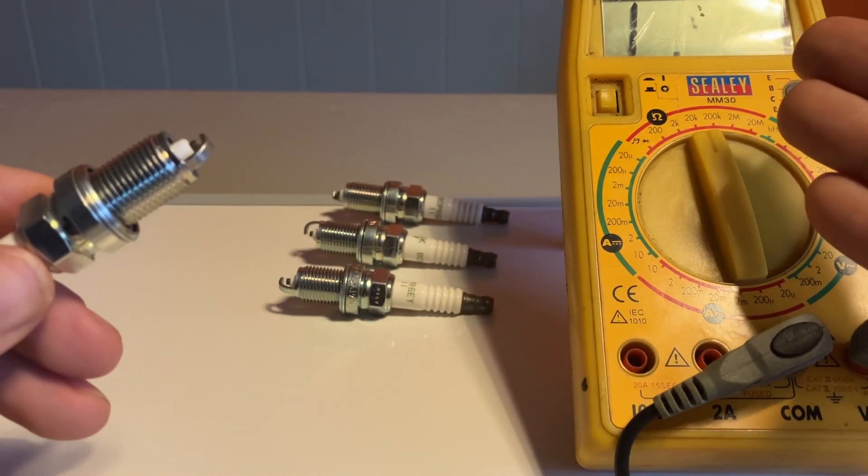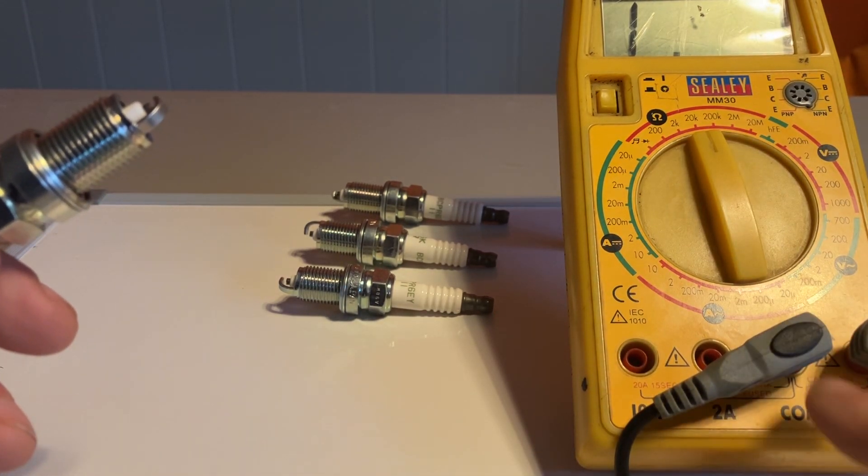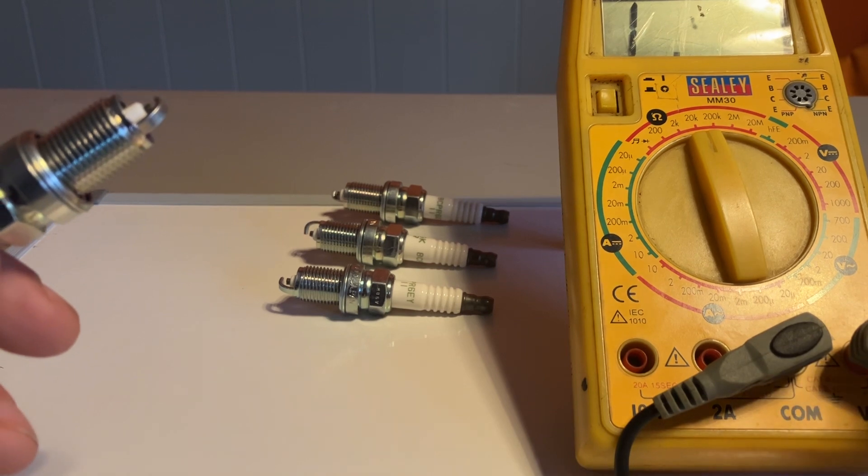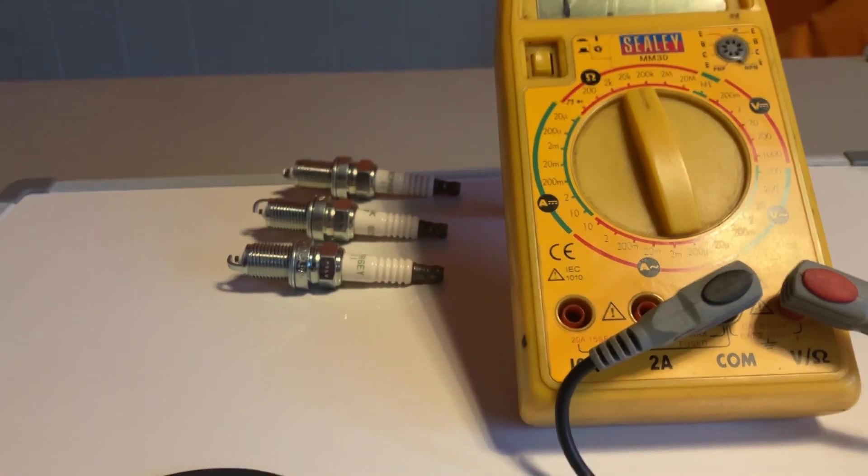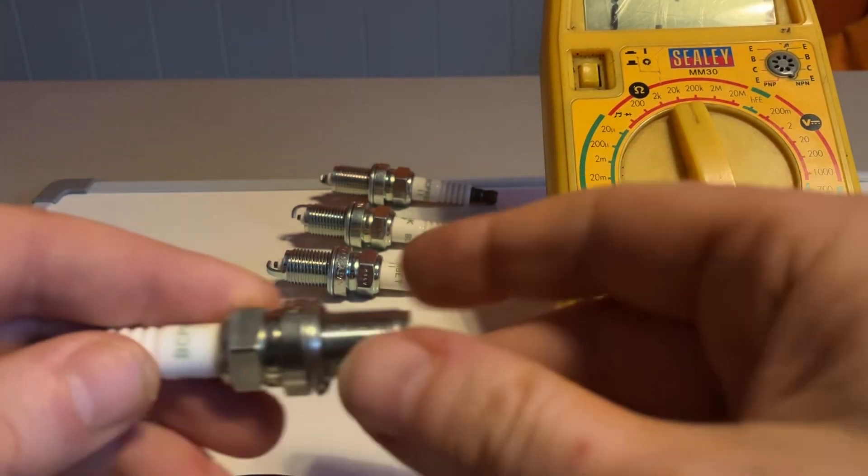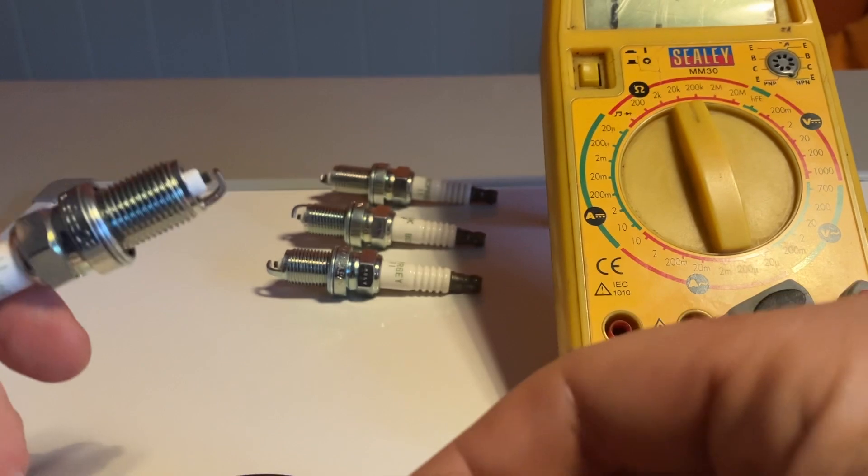I've got my multimeter set up onto omega there, and I've got my earth in the com and the black lead, and the red lead if you can see that is in the ohms setting as well. So they're both ready to go. I'm expecting between sort of one and five thousand ohms, depending on the type and the design of the spark plug.